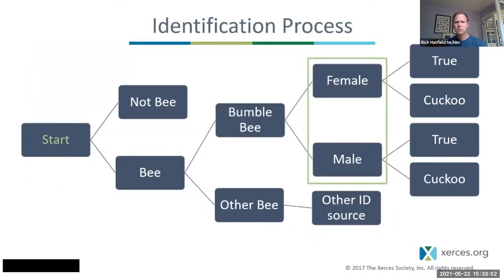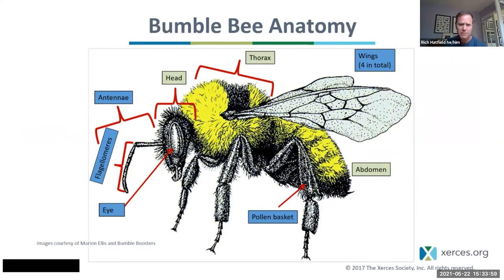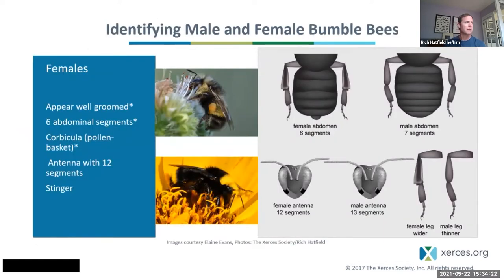Once we've got to bumblebee, we need to think about: do I have a male bumblebee or a female bumblebee? To do that, we're going to look at different anatomical features — antennae, the legs and whether it has a pollen basket, the abdomen shape and length, and the overall features of the bee. Female bees appear very well-groomed because they constantly cover their bodies in pollen and then comb it off to put into their hind legs to bring home to their young.